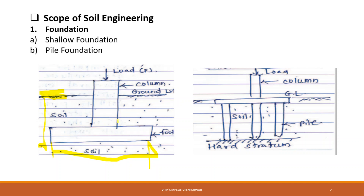This type of foundation spreads the load of the superstructure — the structure above the ground — into the ground laterally. Hence, shallow foundations are generally also known as spread foundations. In shallow foundations, the depth-to-width ratio is unity or less than unity. For example, if the depth is 1 meter, the width should be 1 meter or more. Generally, shallow foundations are set within 1.5 meters depth from the ground level.